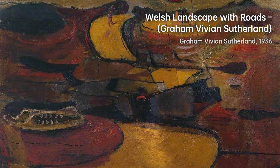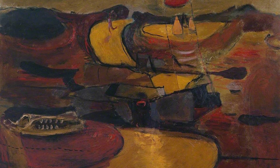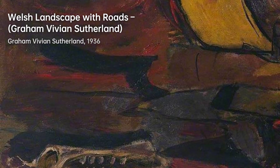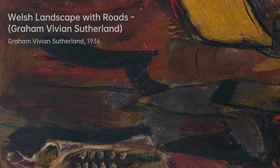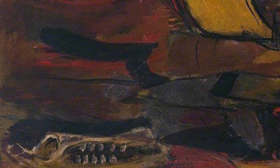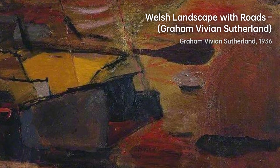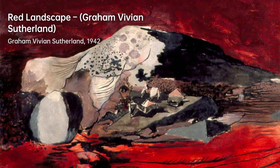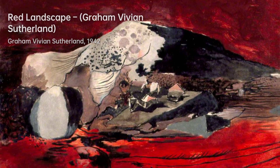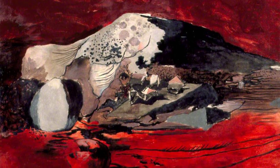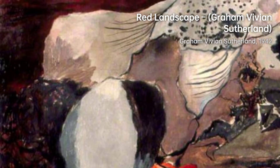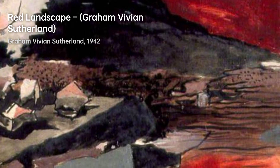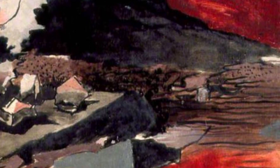Sutherland's influence extended beyond his artwork. He was commissioned to design the central tapestry, Christ and Glory in the Tetramorph, for the new Coventry Cathedral. However, some of his portrait commissions in the 1950s sparked controversy, notably Winston Churchill's dislike of his depiction. Sutherland also taught at various art colleges, including Chelsea School of Art and Goldsmiths College. Living abroad in Nice led to a decline in his status in Britain, but a visit to Pembrokeshire in 1967 revitalized his creativity and helped restore his reputation as a leading British artist.